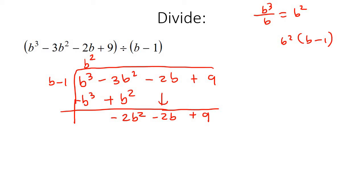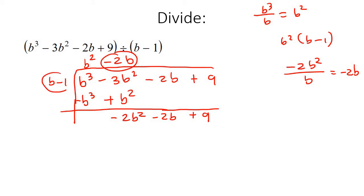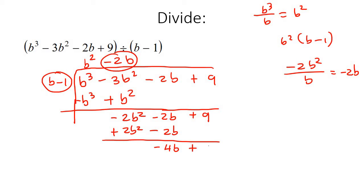We start the process again. The largest powers are negative 2b squared and b. We divide: negative 2b squared divided by b is negative 2b. So we write negative 2b at the top. We take that negative 2b and multiply it, giving us negative 2b squared, positive 2b. We switch the signs — positive and negative — and add: negative 2b squared plus 2b squared is 0. Negative 2b take away 2b is negative 4b. Then we bring the 9 down.